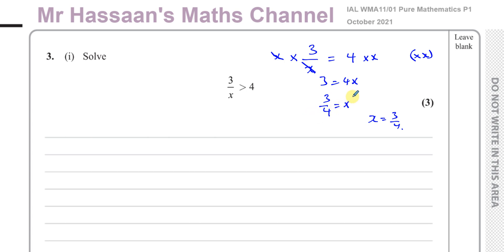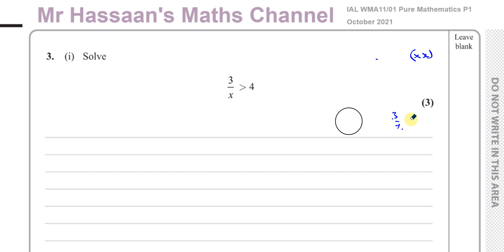The problem is, in an inequality, if you multiply both sides by a negative number, or divide by a negative number, then the inequality sign must switch direction — from greater than to less than. And since x is unknown and we don't know whether it's positive or negative, we cannot multiply by x because the inequality sign is there.